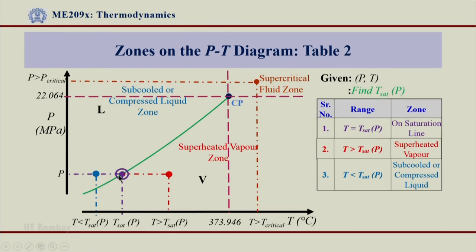And the fourth case is the same case as what we had seen earlier. If the pressure and temperatures are beyond the critical limits, so T is more than T_critical and if P is more than P_critical, then the system lies in a supercritical fluid zone as shown over here.